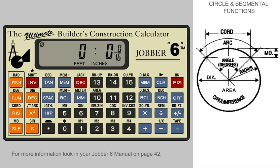Or if we only know the circumference of a circle or cylinder, the Jobber 6 will automatically calculate the radius, diameter, area, and volume if you know the height and depth. With this in mind, let's solve some circles.